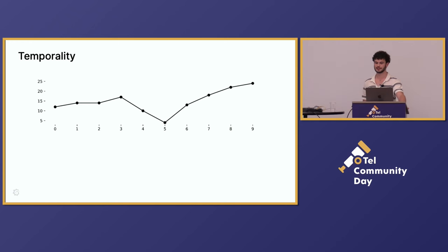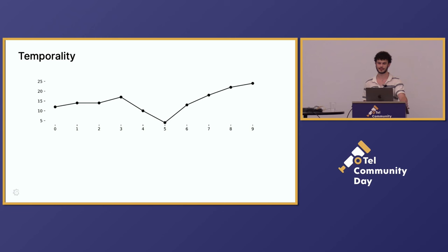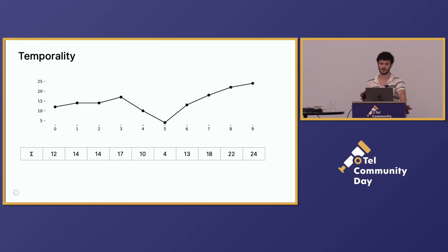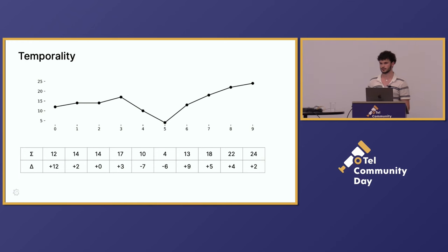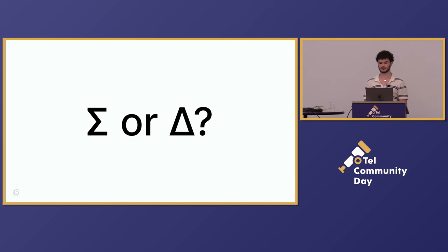For those who have no idea what I'm actually talking about, I brought this little example graph, which is just some random time series that you might have. One way to send this time series over the internet would be to send the absolute values — like it's a counter, going up and down, and you essentially accumulate from some random starting point in time. An alternative way to transmit the same information would be to transmit the changes. So instead of doing the absolute over time, you just say plus two, plus zero, plus three, minus seven. Both ways are technically mathematically equivalent. However, they do have certain differences on the edge cases when actually using them, which opens up the question: which to use — delta or cumulative? I'm using the sum symbol for cumulative and delta for delta.